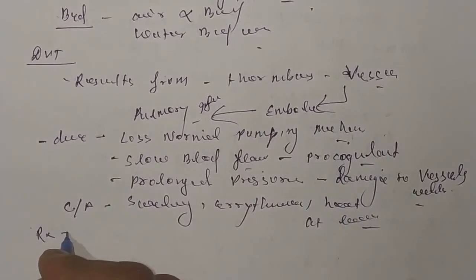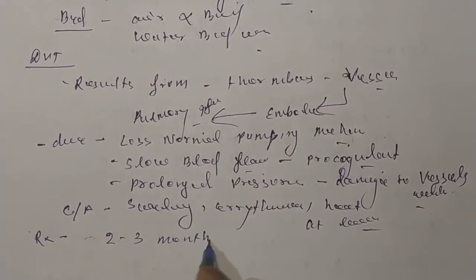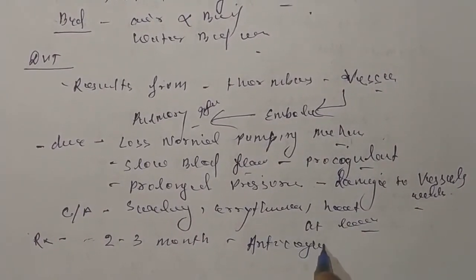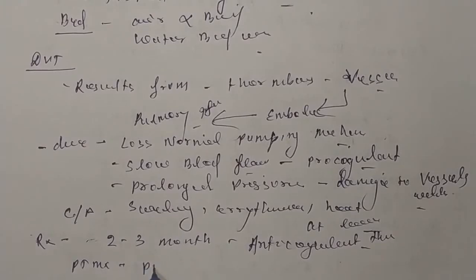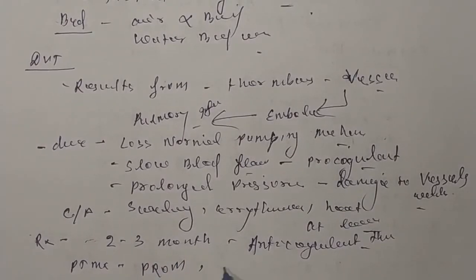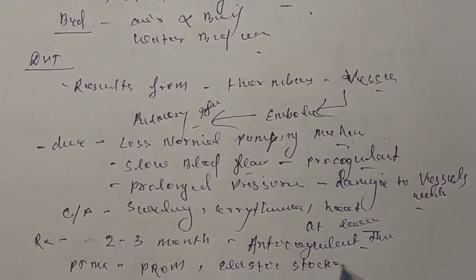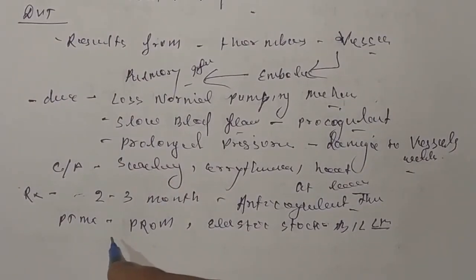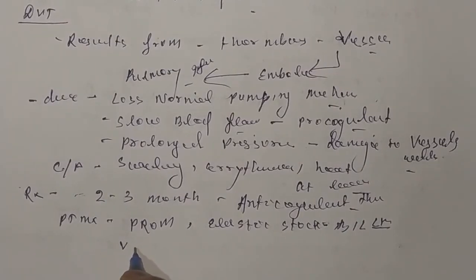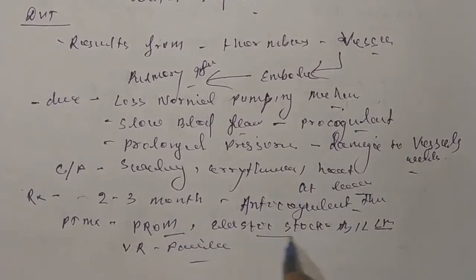For DVT treatment, prophylactic anticoagulant therapy is given immediately after injury and continued for at least 2 to 3 months. Physiotherapy management includes passive range of motion exercises, elastic stockings applied to bilateral lower extremities, and positioning of the lower extremity to facilitate venous drainage and venous return.